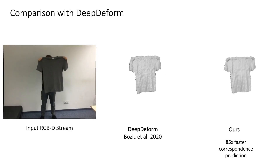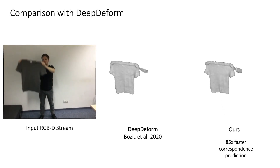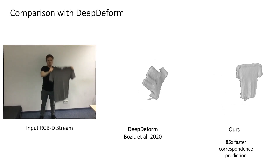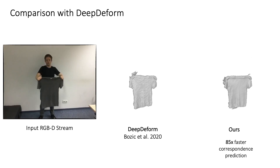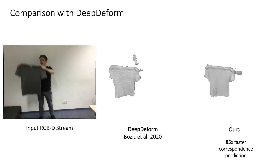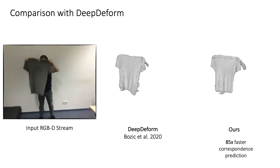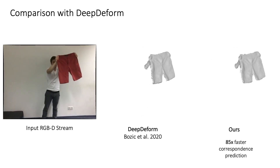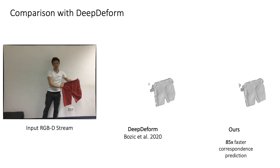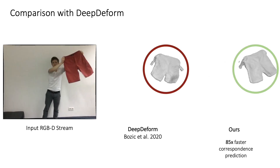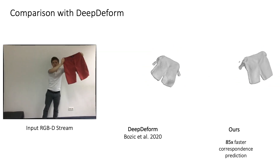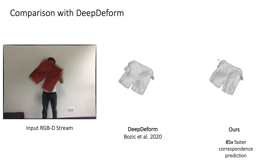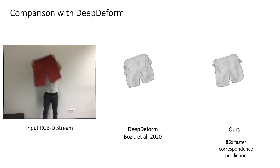First, we compare our approach to DeepDeform, the prior state-of-the-art, which is based on learned sparse correspondences. Instead, our end-to-end approach learns dense correspondences, achieving more robust tracking in the presence of faster motion. Moreover, our correspondence prediction is 85 times faster.